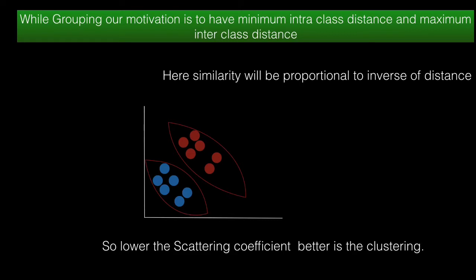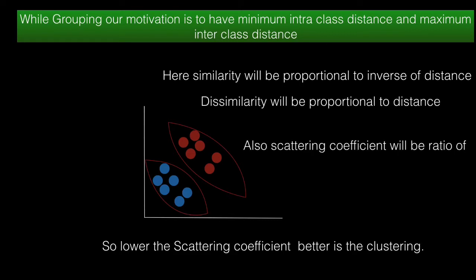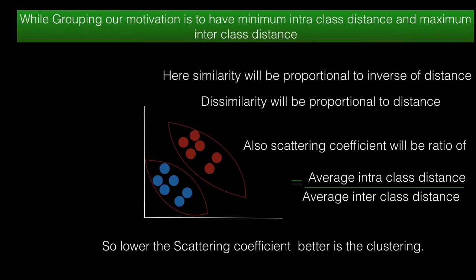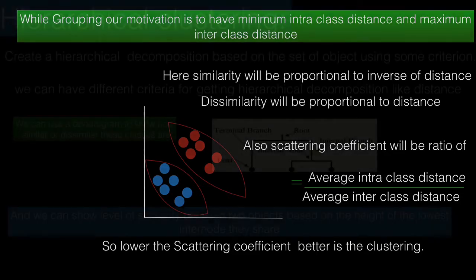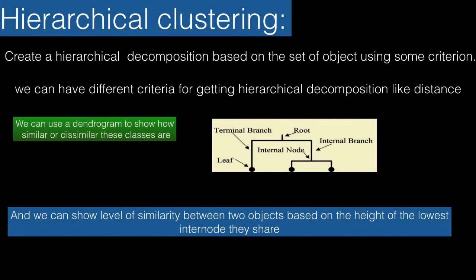Similarity will be inversely proportional to distance. The more similar they are, the closer the datasets will be. The more distance they have, the more dissimilar they'll be. The scattering coefficient will be the ratio of average inter-class distance divided by average intra-class distance. The lower the scattering coefficient, the better the clustering model.